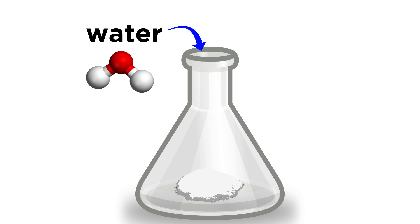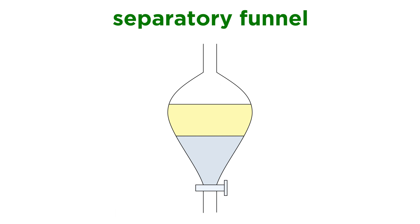So to separate this mixture, we would just toss in some water, and then some ether. We swirl it around for a while, and then put everything in something called a separatory funnel. Since these two solvents are immiscible, meaning they do not mix, we will get two layers.